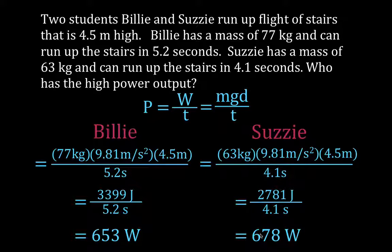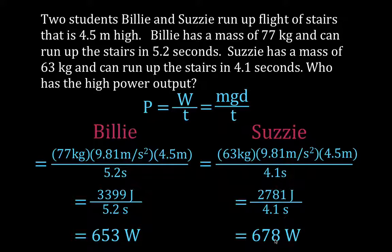So that's how you compare the power output of two different people, or two different machines or motors, whatever it happens to be. Calculate the power for each one — work divided by time — and compare the two. That's pretty straightforward.